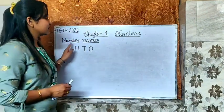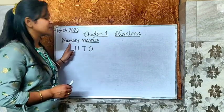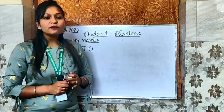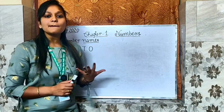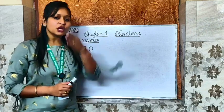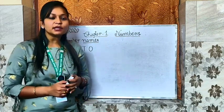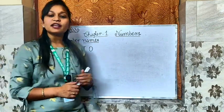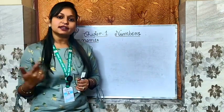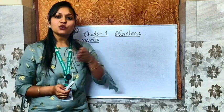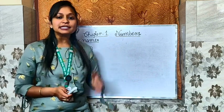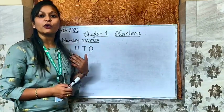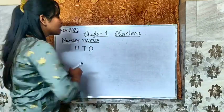We will be starting with our first topic, that is number names. What are the number names? We have given a name to every number. Like I have some name, you are having some name. So every number is having a name. For example, 1 is having a name O-N-E. The name of 1 is ONE. The name of 2 is T-W-O.